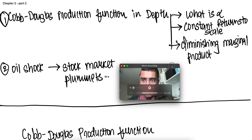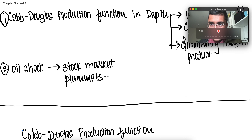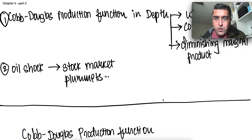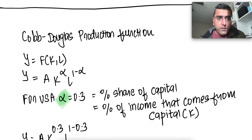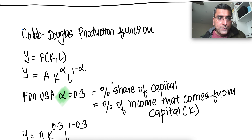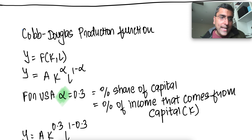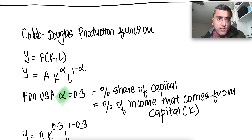So let's get into it. We know the Cobb-Douglas production function is y = f(K, L) — output y is a function of capital and labor.